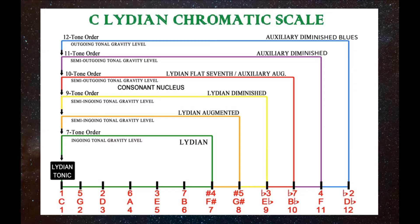This is the C Lydian chromatic scale. On the left hand side you can see the Lydian tonic, which is C. We can see the tones of the five tonal orders descending upon this Lydian tonic — they all fall down upon it. The third in descending order, as you can see, is the Lydian diminished, shown in yellow. It belongs to the nine toned order.